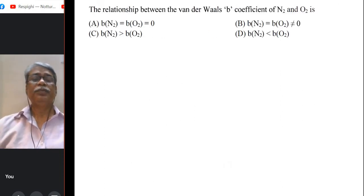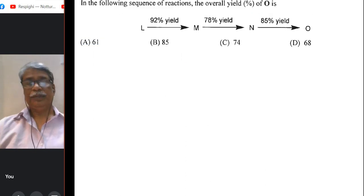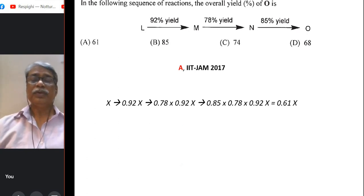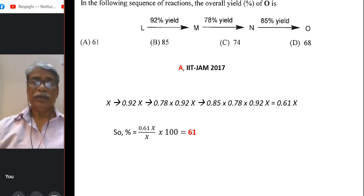The next question, relationship between the Van der Waals B coefficient of nitrogen and oxygen. It is obviously a very trivial question because nitrogen is bigger in size and somehow you know that Van der Waals constant B measures the molecular volume. So B of N₂ is greater than B of O₂, option C. Well, L starts and gives you M 92%, then N 78%, and then O 85%, right. So the overall yield of O is asked. Let us start with that x is the starting amount. So in the first step it gives you 0.92x. In the second step 0.78 because it is 78% of the previous product. So 0.78 × 0.92x. Similarly, the third step is 0.85 × 0.78 × 0.92x. So finally, it gives you 0.61x. So the final percentage calculation, 0.61x divided by initial x × 100 for percentage, so it is exactly 61%.